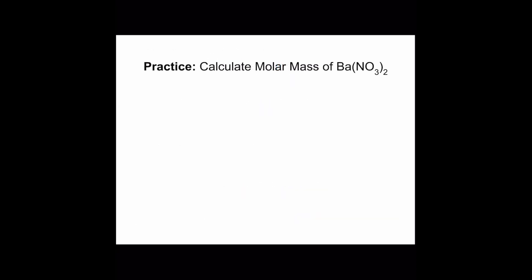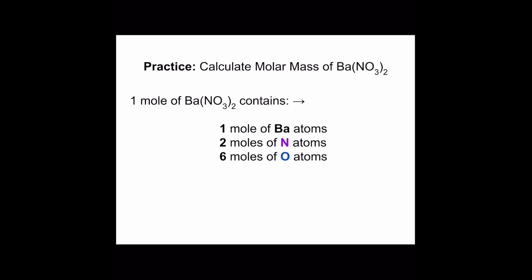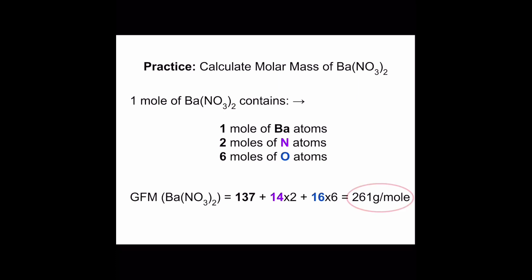Barium nitrate: from its formula, we can see that it is made of 1 mole of barium, 2 moles of nitrogen, and 6 moles of oxygen. Remember that the subscript outside of the parenthesis applies to every element inside the parenthesis. We look up the molar masses on the periodic table and add them up — don't forget to multiply the molar mass of nitrogen by 2 and the molar mass of oxygen by 6.